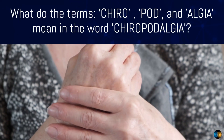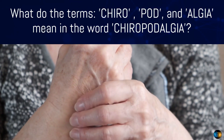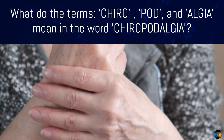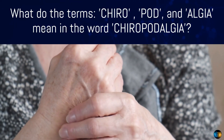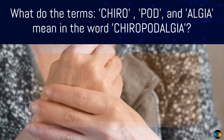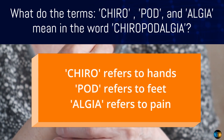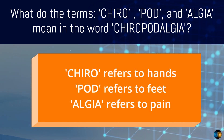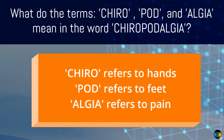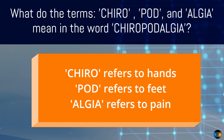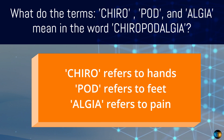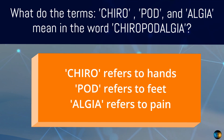What do the terms chiro, pod, and algia mean in the word chiropodалgia? Chiro refers to hands, pod refers to feet, and the suffix algia refers to pain. So, chiropodалgia refers to pain in the hands and feet.